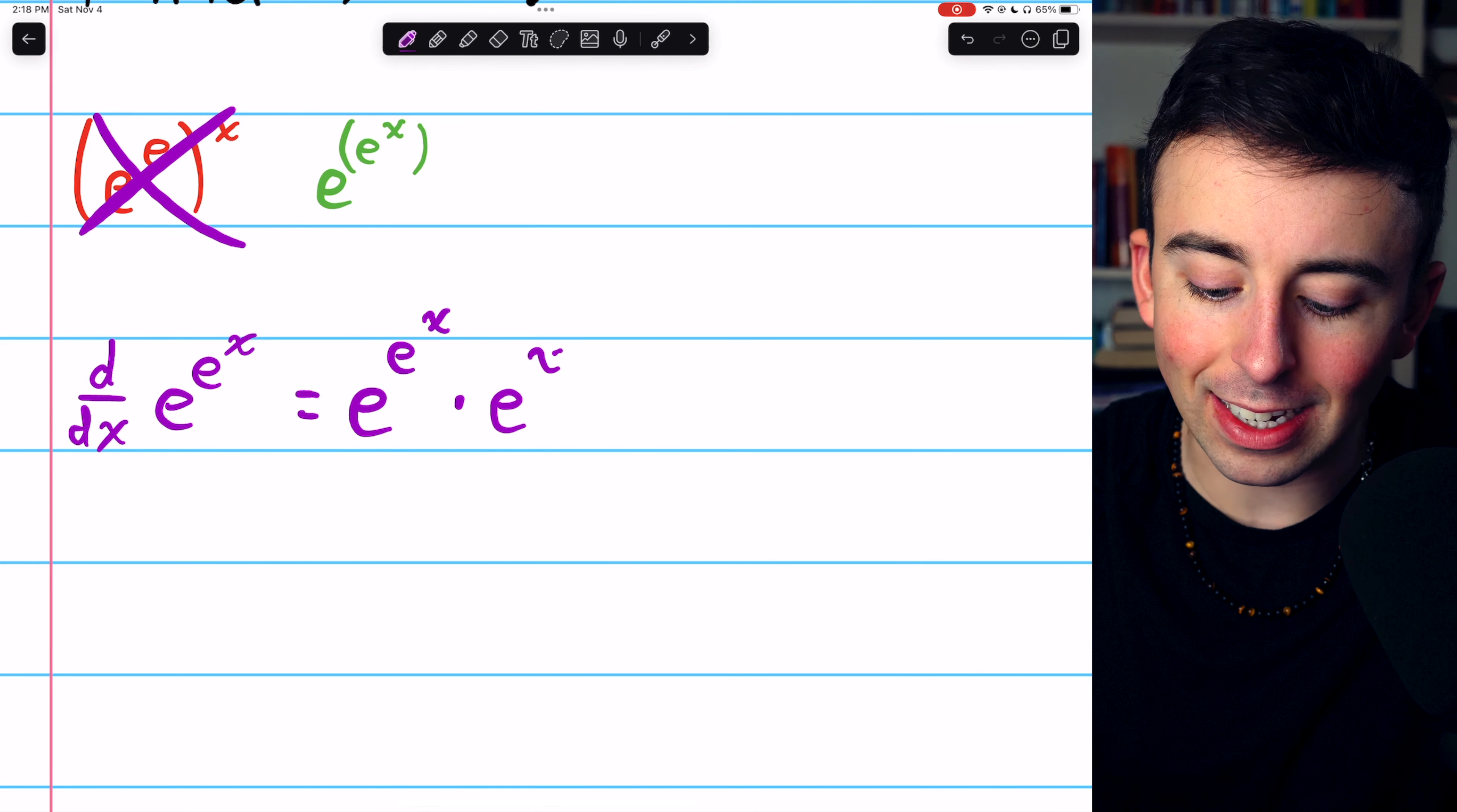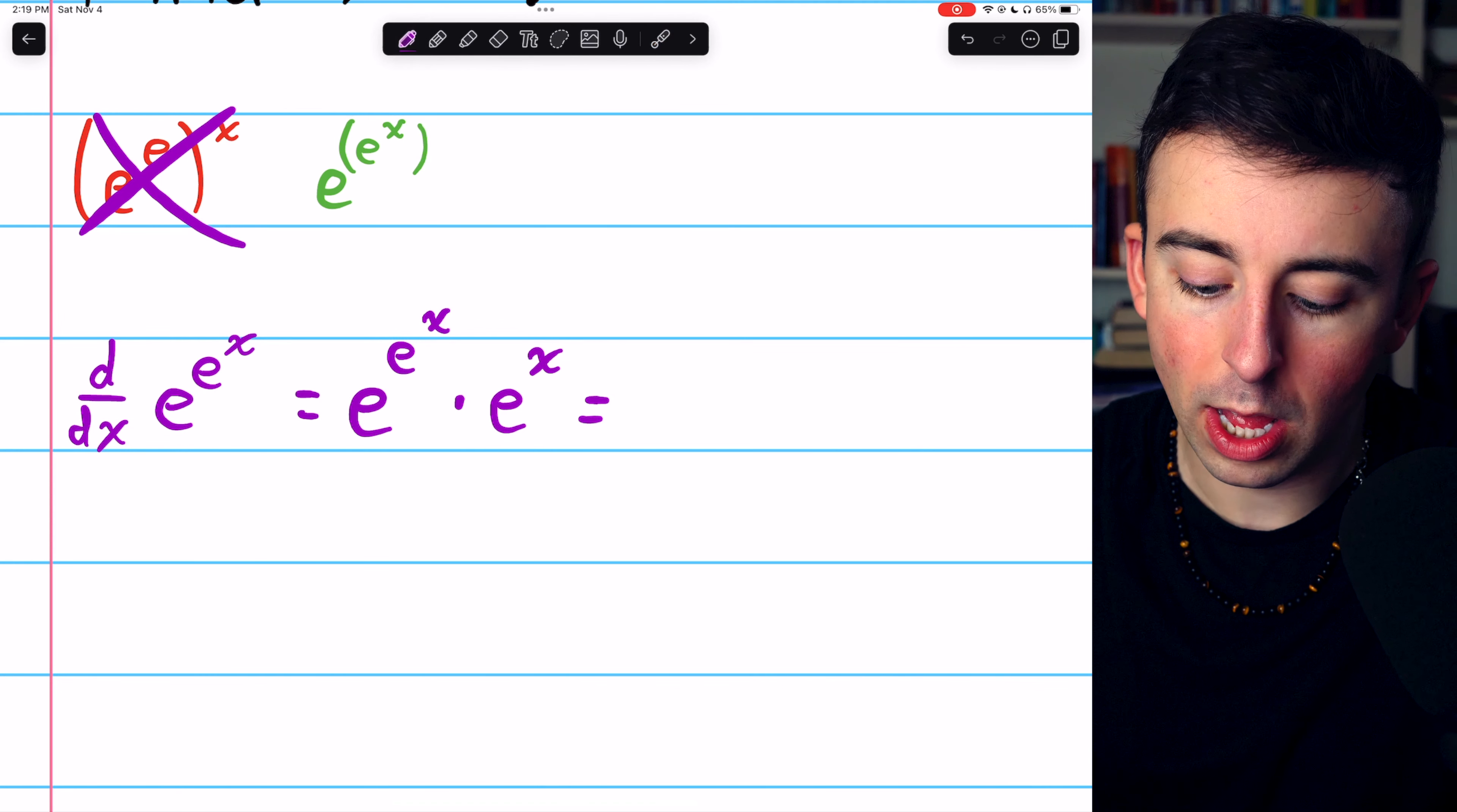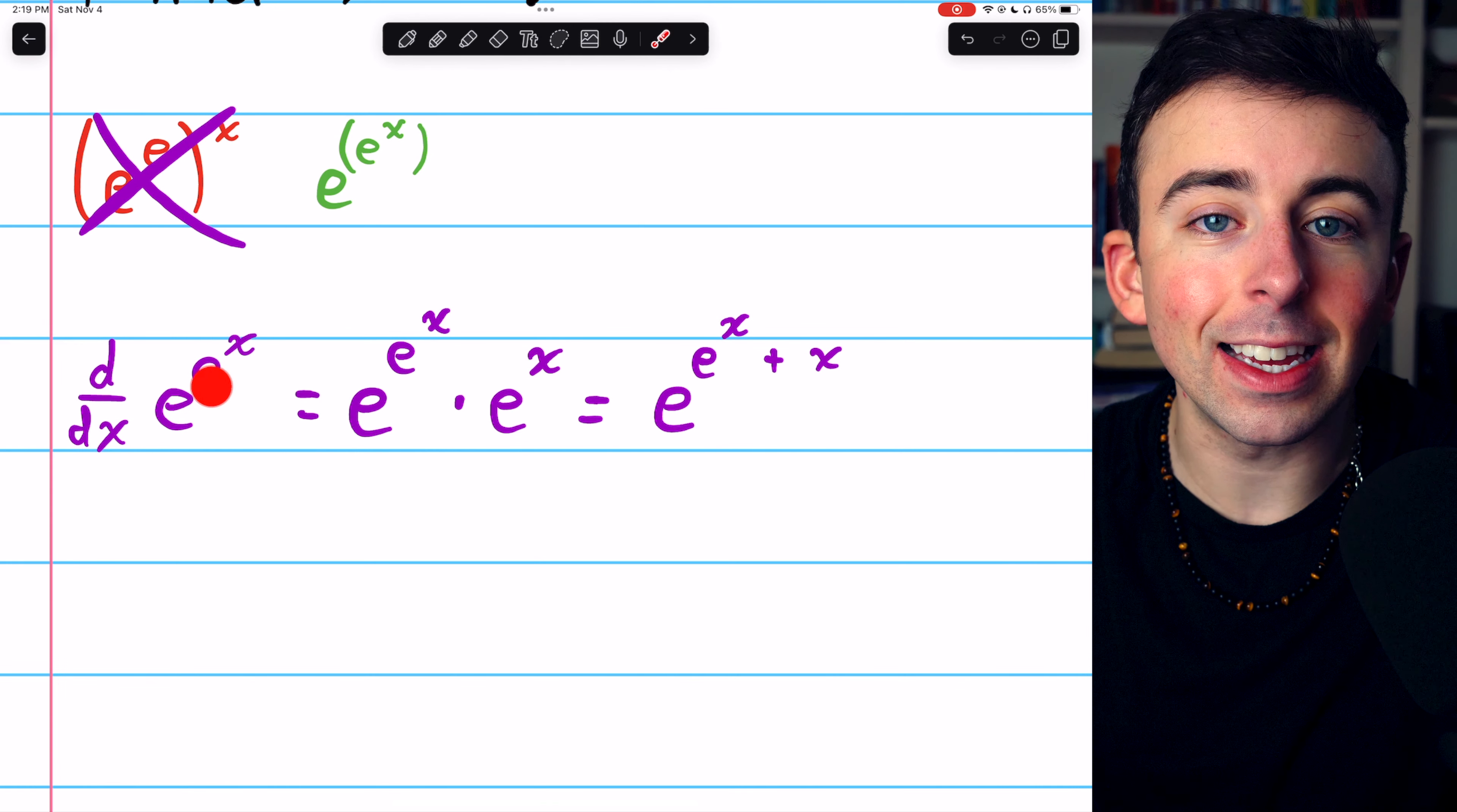So that is our derivative. Although, of course, we have common bases here, so we can combine them into one factor by adding the exponents together. That's just laws of exponents. And that is the derivative of e to the e to the x.